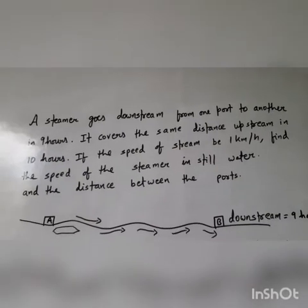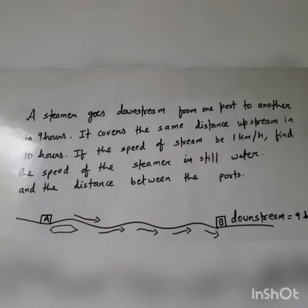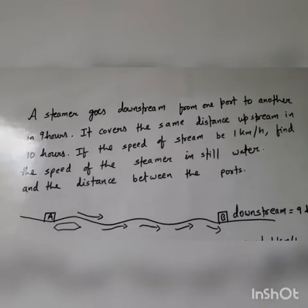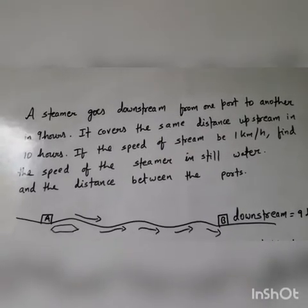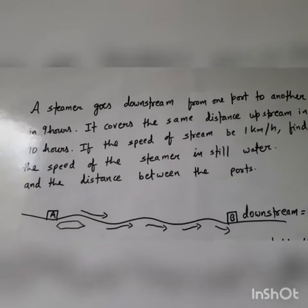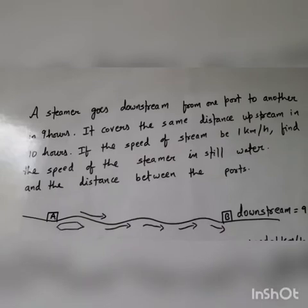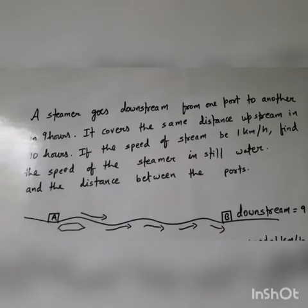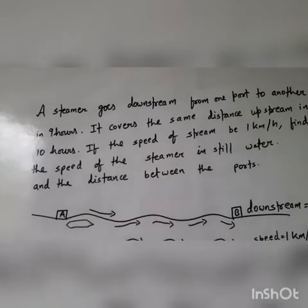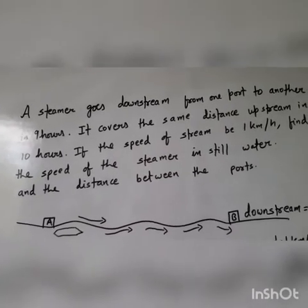So second question is this: a steamer goes downstream from one port to another in 9 hours and the same distance upstream in 10 hours. Given the speed of stream is 1 km per hour, we have to find speed of the steamer in still water and distance between ports.